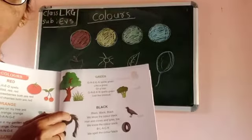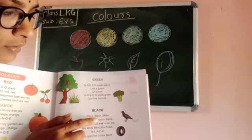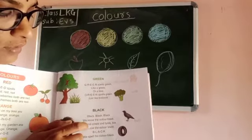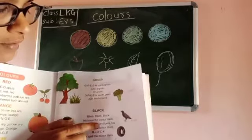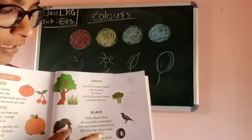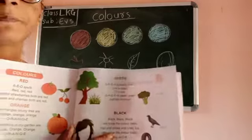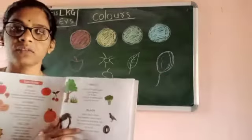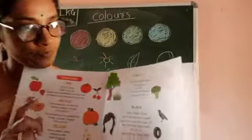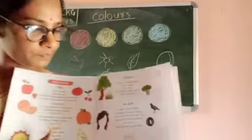Okay children, next — black. You know black color. We know the color black. B-L-A-C-K. Your hairs are black color, and crows are black color, and tires are black color.